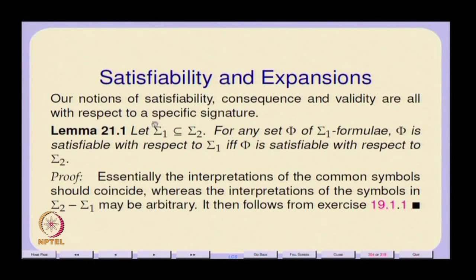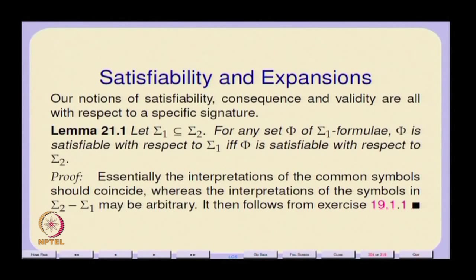Suppose you have a sub-signature. Sigma 1 is a sub-signature of sigma 2, which just means that sigma 2 has all the elements of sigma 1. If any set of formulae phi is satisfiable with respect to sigma 1, the smaller signature, then phi is also satisfiable with respect to sigma 2. The terms in the formula do not have any symbol which occurs in sigma 2 but not in sigma 1, so satisfiability gets carried over. The notion of satisfiability is therefore monotonic with respect to the notion of a sub-signature.